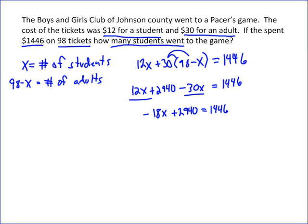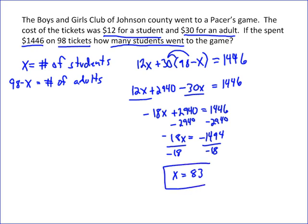If we subtract 2,940 from both sides, we get negative 18x equals negative 1,494. Dividing both sides by negative 18, we get x equals 83. So there were 83 students at the game. If you want the number of adults, plug 83 back in: 98 minus 83 equals 15 adults.